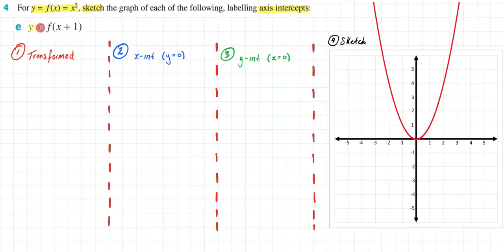So we have y equals f of x plus 1 and as you can see I've broken this down into a few steps. We'll first find our newly transformed rule, then we'll find our x-intercept, then our y-intercept, and then we'll give it a sketch.